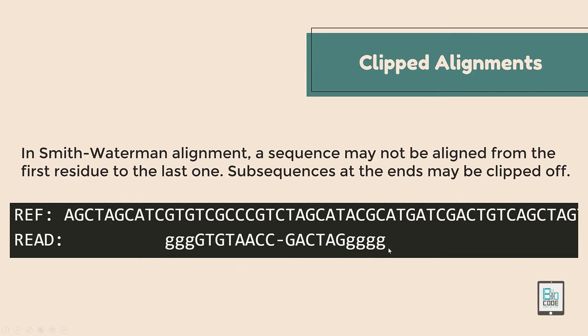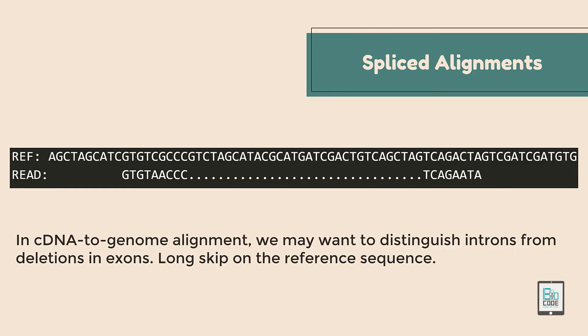In SAM alignment, however, the entire region of the reference genome is shown, and the aligned read is shown where it actually aligns. This is the key difference between the Smith-Waterman algorithm and clipped alignments within the SAM file system.